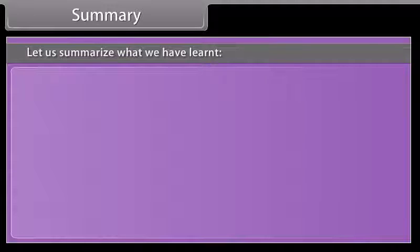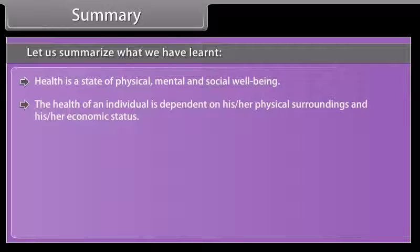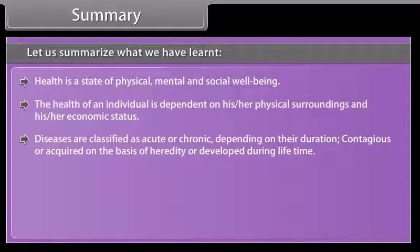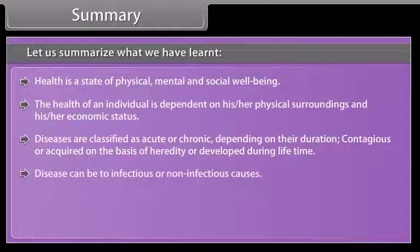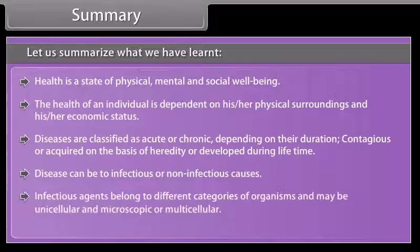Summary: Health is a state of physical, mental and social well-being. The health of an individual is dependent on his or her physical surroundings and economic status. Diseases are classified as acute or chronic depending on their duration, or congenital versus acquired on the basis of heredity or development during lifetime. Disease can be from infectious or non-infectious causes. Infectious agents belong to different categories of organisms and may be unicellular and microscopic or multicellular.